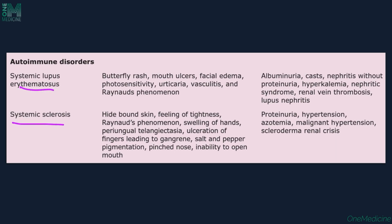We have certain autoimmune disorders like SLE and systemic sclerosis. In SLE, we find skin lesions like butterfly rash on the face which characteristically spares the nasolabial fold, mouth ulcers, facial edema, photosensitivity, urticaria, vasculitis, and Raynaud's phenomenon. Kidney manifestations include albuminuria, casts, nephritis without proteinuria, hyperkalemia, nephritic syndrome, renal vein thrombosis, and lupus nephritis.